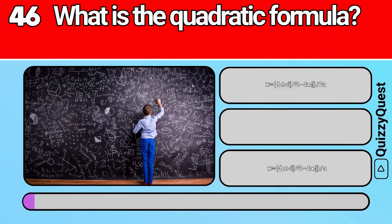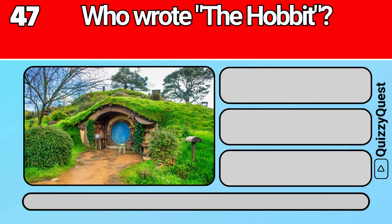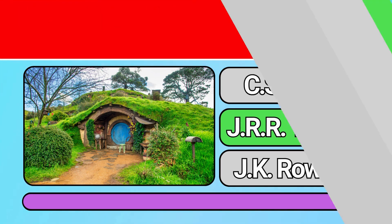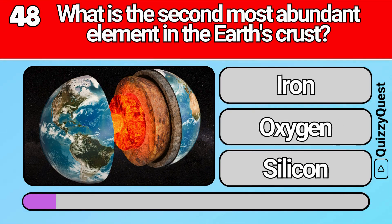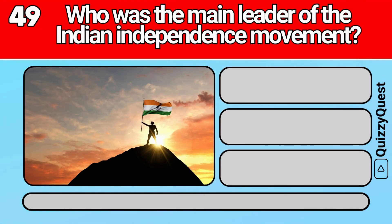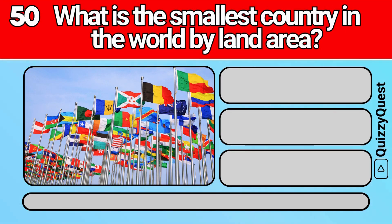What is the quadratic formula? Who wrote The Hobbit? What is the second most abundant element in the Earth's crust? Who was the main leader of the Indian independence movement? What is the smallest country in the world by land area?